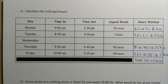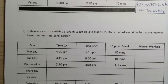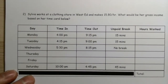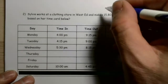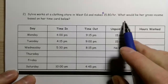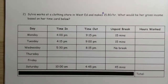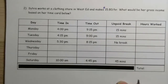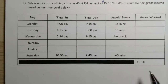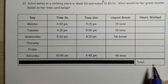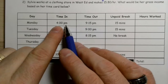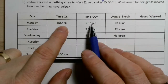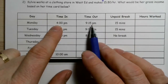Now we're going to do this again. This time we're going to look at Sylvia's situation. She works at a clothing store in West End and makes $15.80 an hour. We want to calculate her gross income, so we're going to look at her time card, figure out her total time, and then figure out how much she's going to get paid.